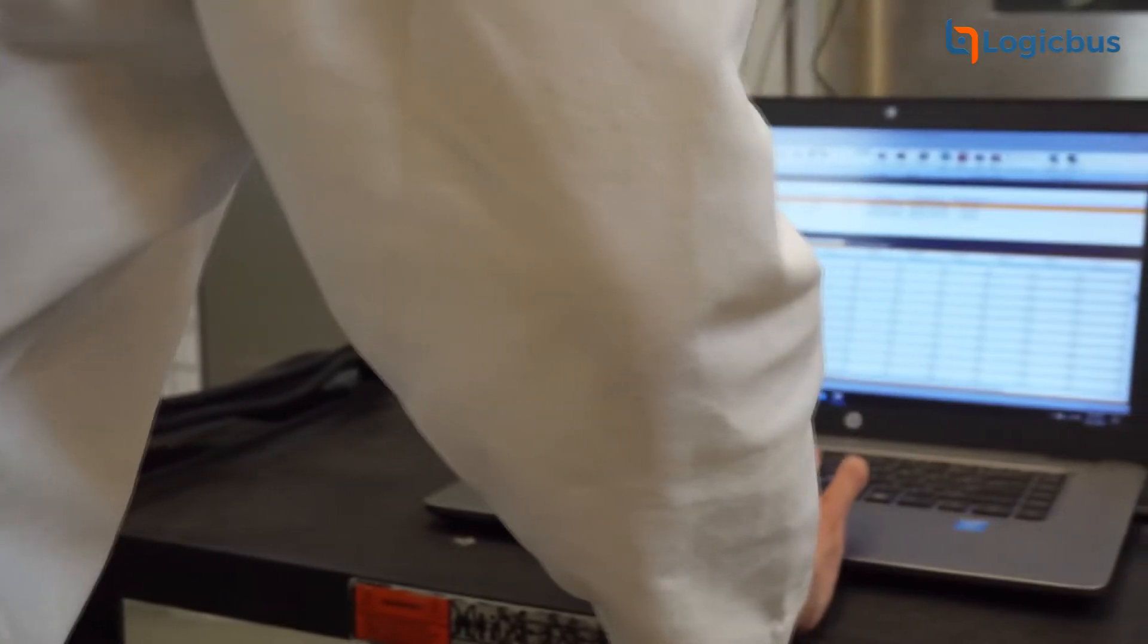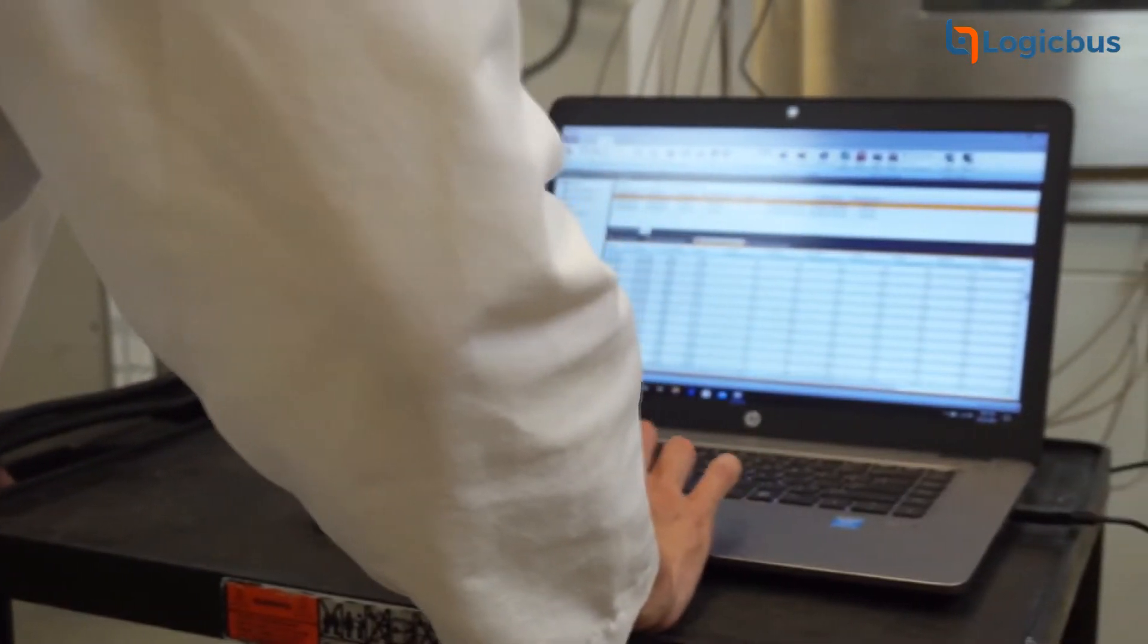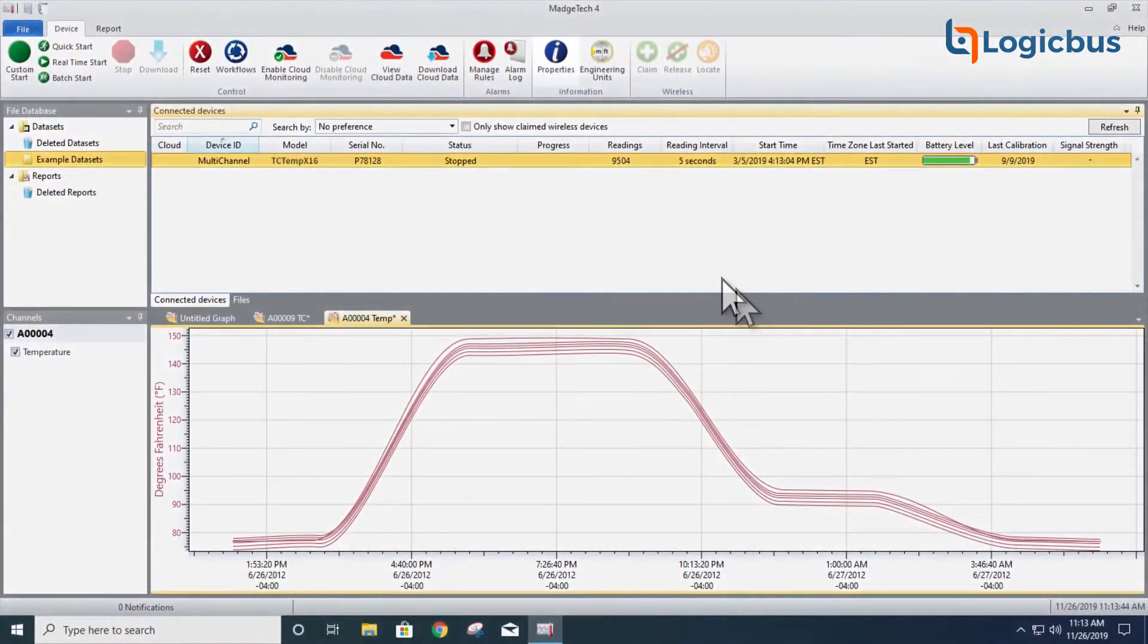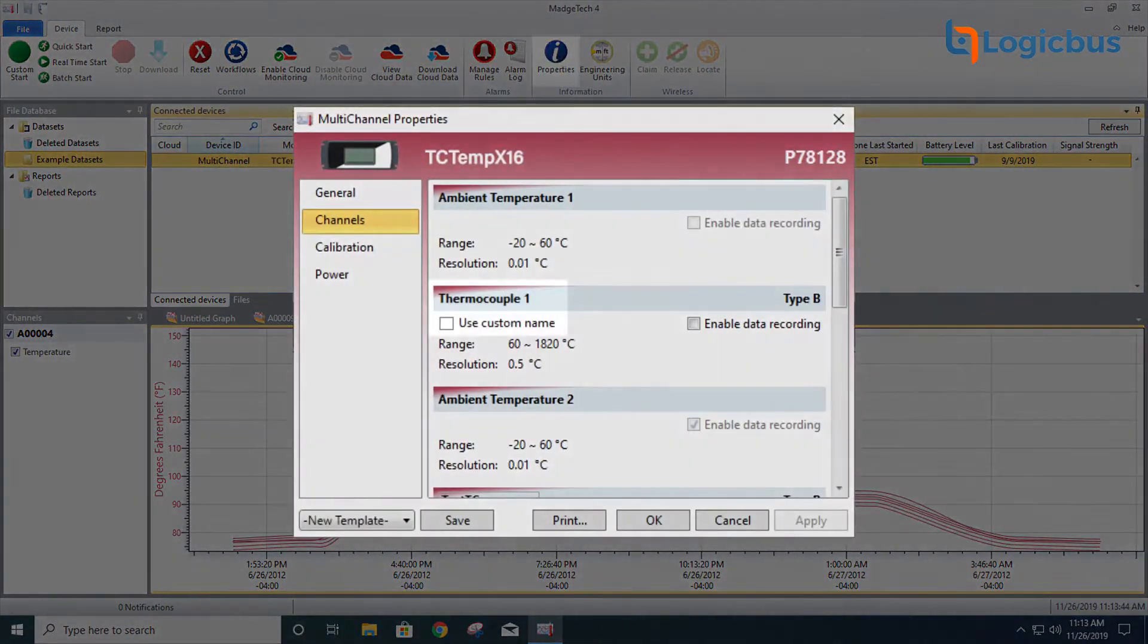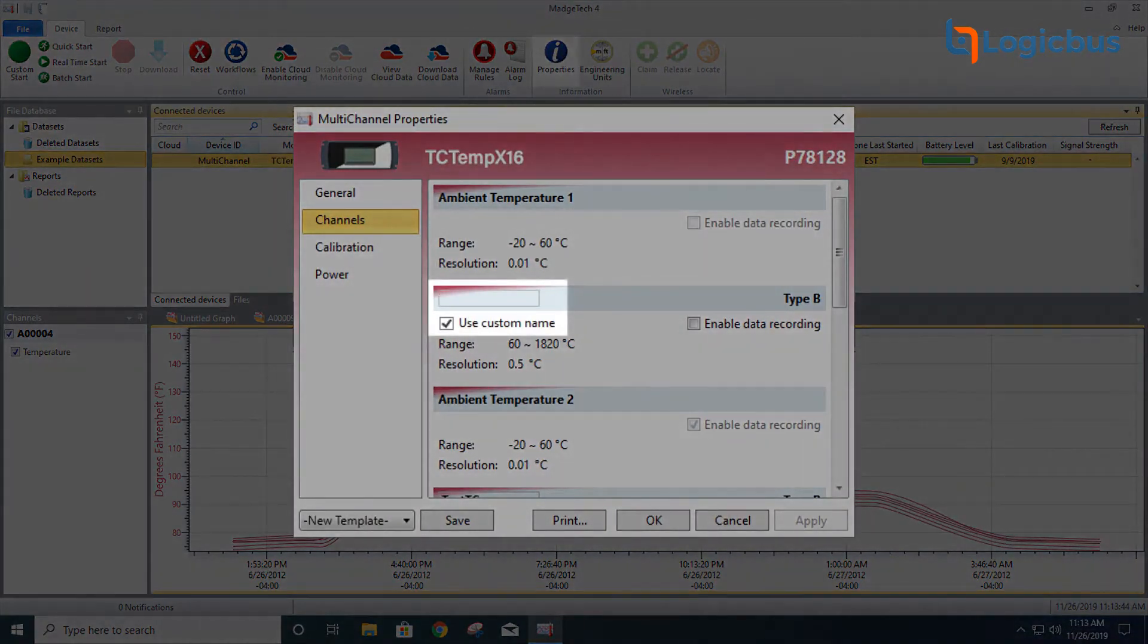You may find it helpful to label each thermocouple for ease of data identification. This can be done physically with a label maker, or if you're using a Matchtech data logger, you'll also have the additional ability to rename each channel from the properties window within Matchtech's free data logging software.